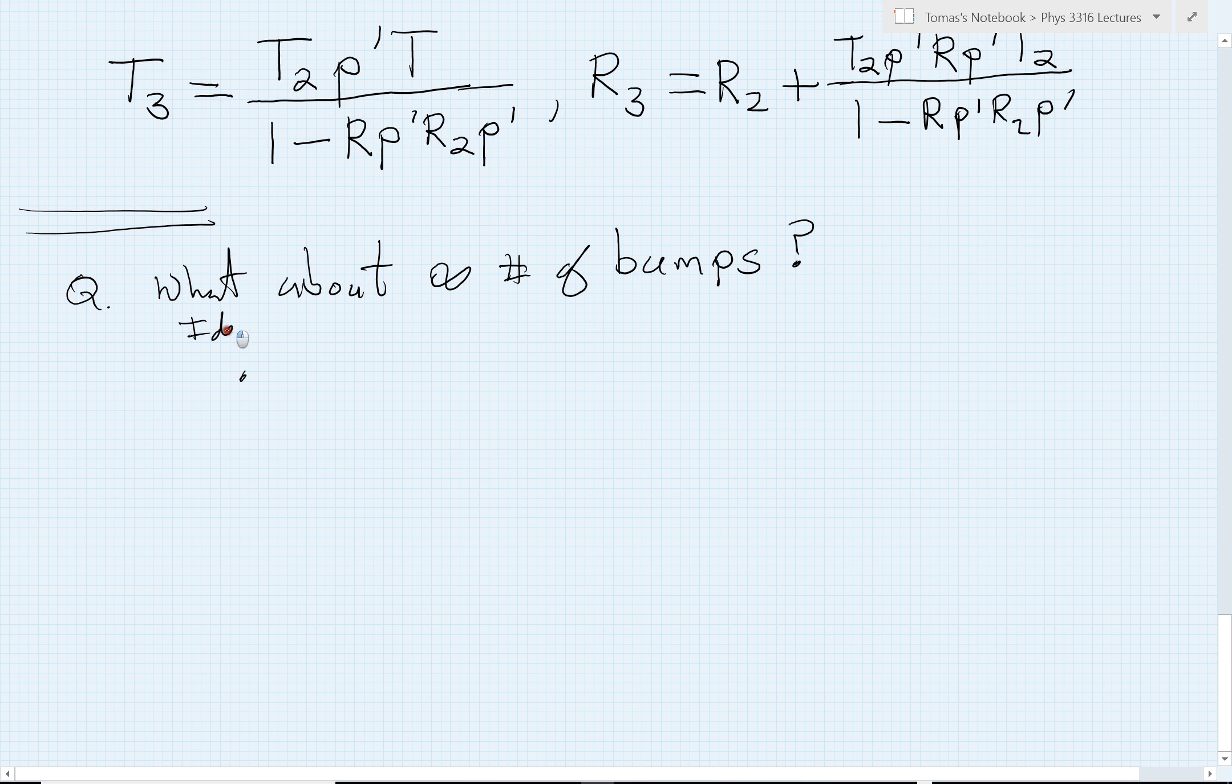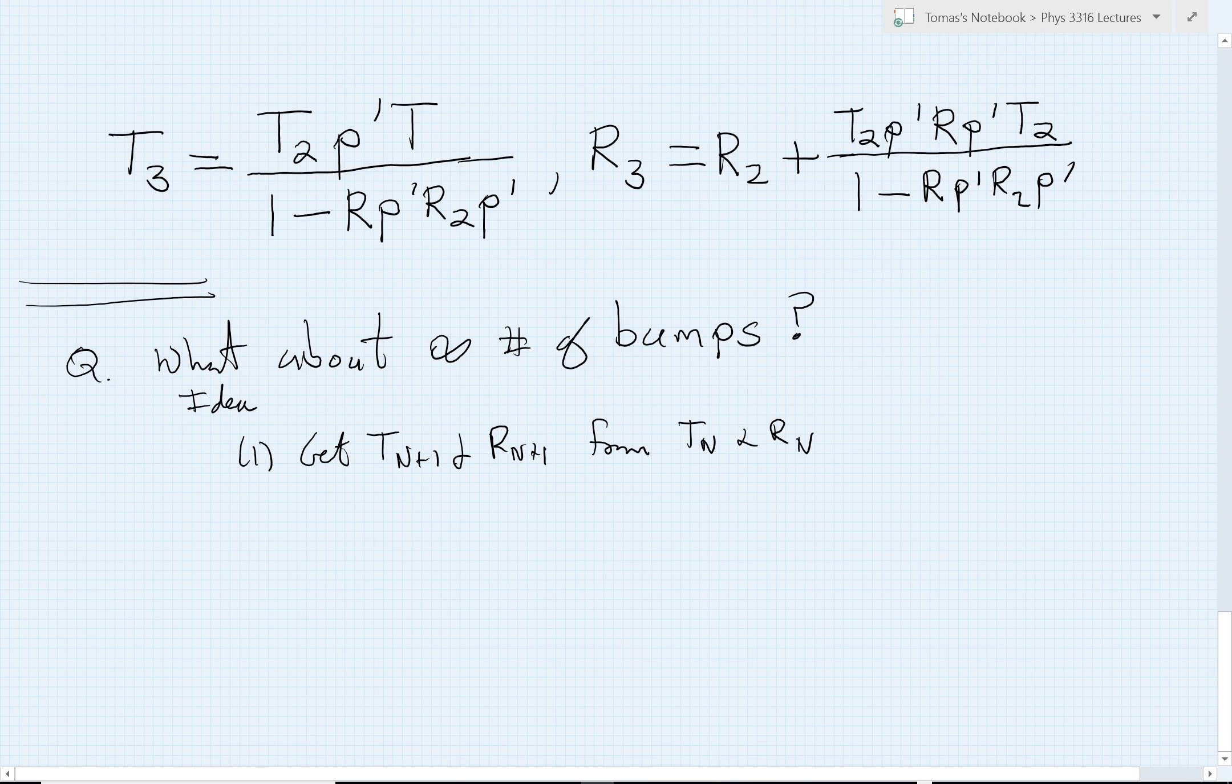First phase is we're going to learn how to get T(n+1) and R(n+1) from knowing Tn and Rn. Certainly we can figure that out. It's going to look very similar to the formula for going from 2 to 3.